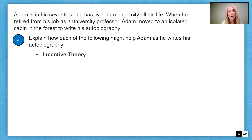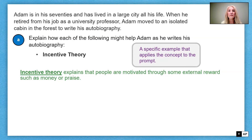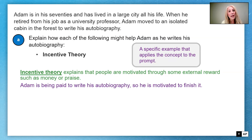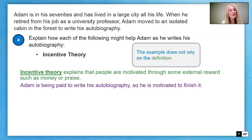Now we address incentive theory. Incentive theory explains that people are motivated through external rewards such as money or praise. Adam is being paid to write his autobiography, so he is motivated to finish it. I've given a very specific example of an incentive, and the example does not rely on the definition.